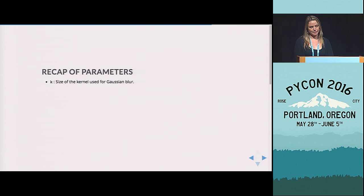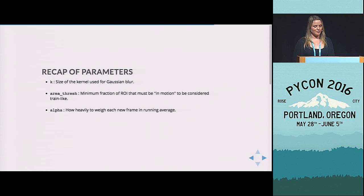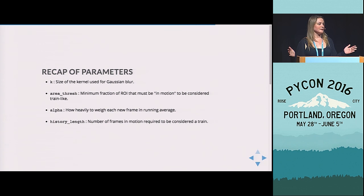So just as a recap, we used the kernel size to figure out how much we wanted to smooth that image. We used a threshold to figure out how much motion means a train is in motion. We used that alpha value to figure out how heavily we should weight each new frame in the background model. And we used the length of the train to be able to detect it as a train and not anything else.